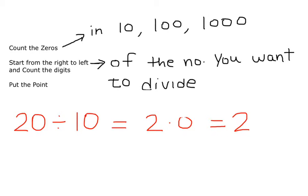It's very easy to divide by 10, 100, and 1000. The method is very simple. Count the zeros in 10, 100, and 1000. Like in 10 we have one zero, 100 we have two zeros, 1000 we have three zeros, and so on. Then start from the right to left of the number you want to divide, count that many digits, and put the point.